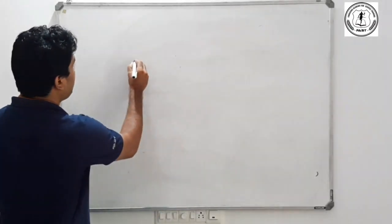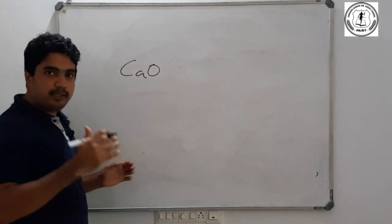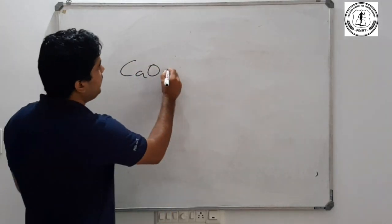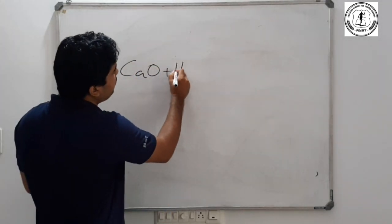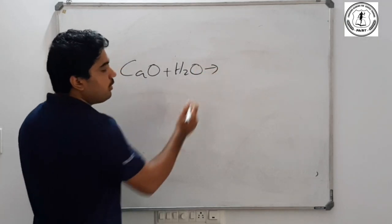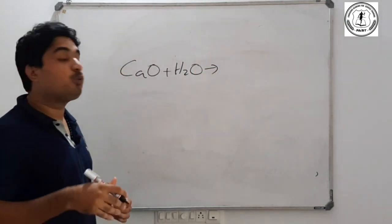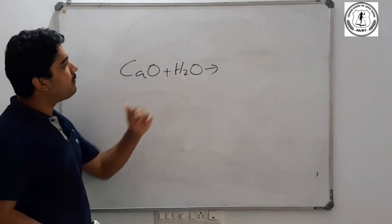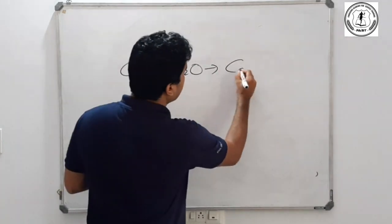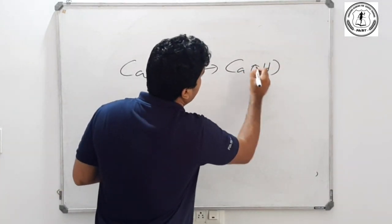What is calcium oxide? This is calcium oxide — it is very reactive. Calcium oxide plus water gives calcium hydroxide.